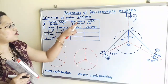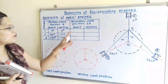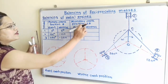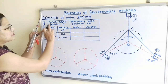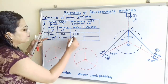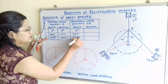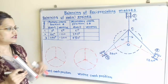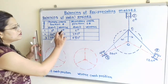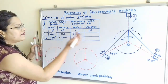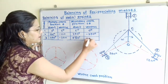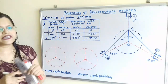Now we move to the next column: secondary crank position 2θ. We multiply each primary crank angle by 2. For the direct crank: cylinder 1 gives 2×0 = 0°, cylinder 2 gives 2×120 = 240°, and cylinder 3 gives 2×240 = 480°. For the reverse crank: cylinder 1 gives 0°, cylinder 2 gives 2×(−120) = −240°, and cylinder 3 gives 2×(−240) = −480°. The table is now complete.